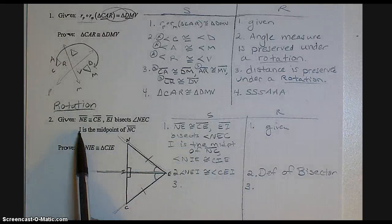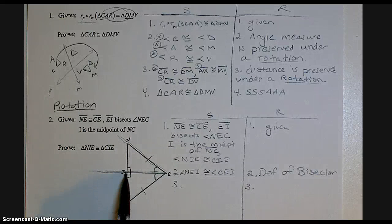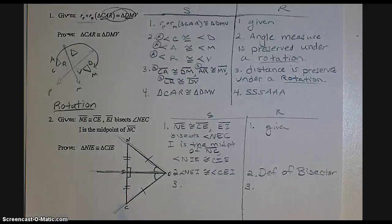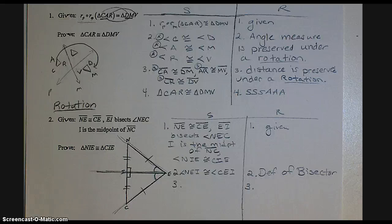Now I'm going to continue reading the given. So I is the midpoint of NC. Here's NC. I is the midpoint, which means it's right in the middle. So that then tells me those two smaller segments are congruent. So that's the next thing that I'm going to put into my proof.